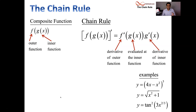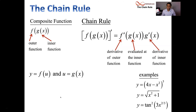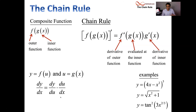Another way you can do this is by doing a renaming. You can let u equal the inside function, and then y will be f of u. Then to execute the chain rule, you find dy/du and you find du/dx, and you multiply those two together. dy/dx is what you're looking for — that's the symbol for the derivative of y with respect to x. So we'll take the derivative of y with respect to u and multiply it by the derivative of u with respect to x.